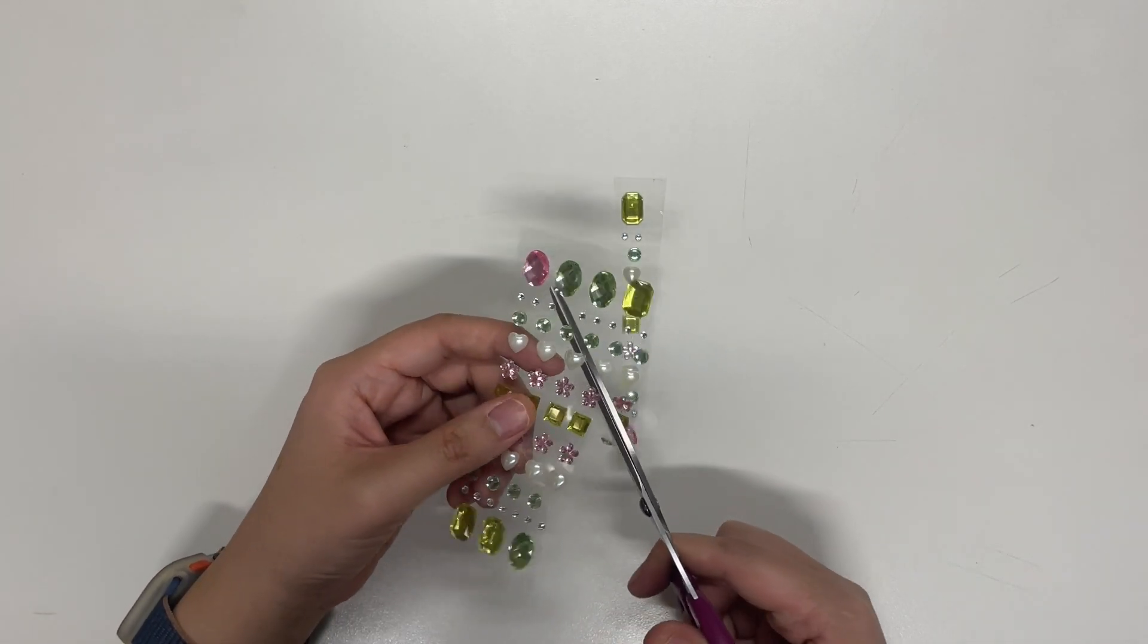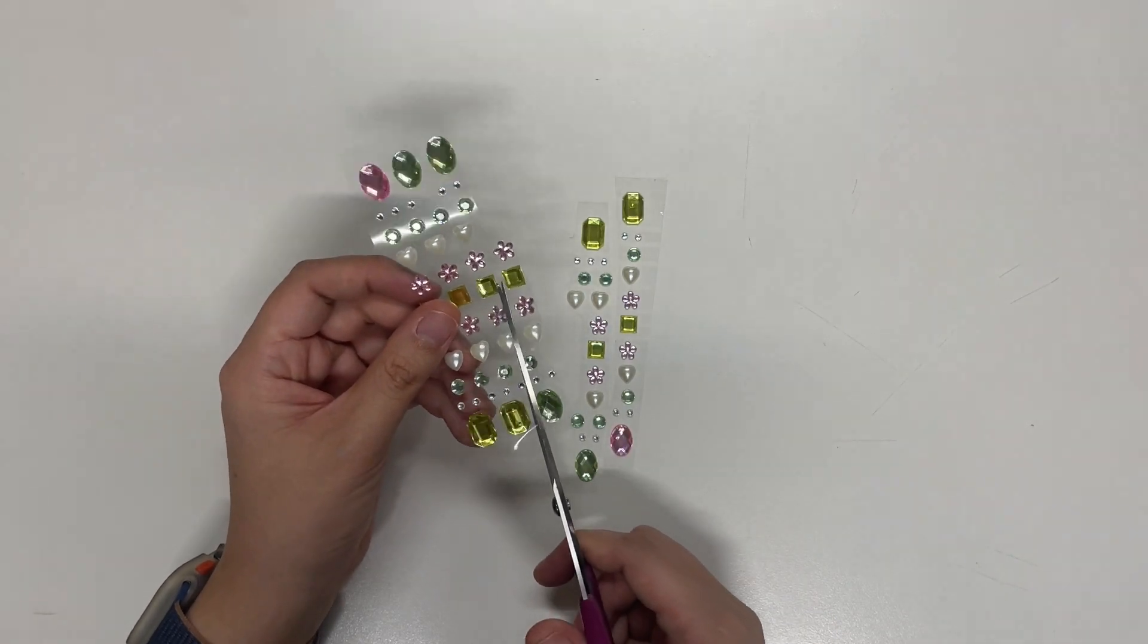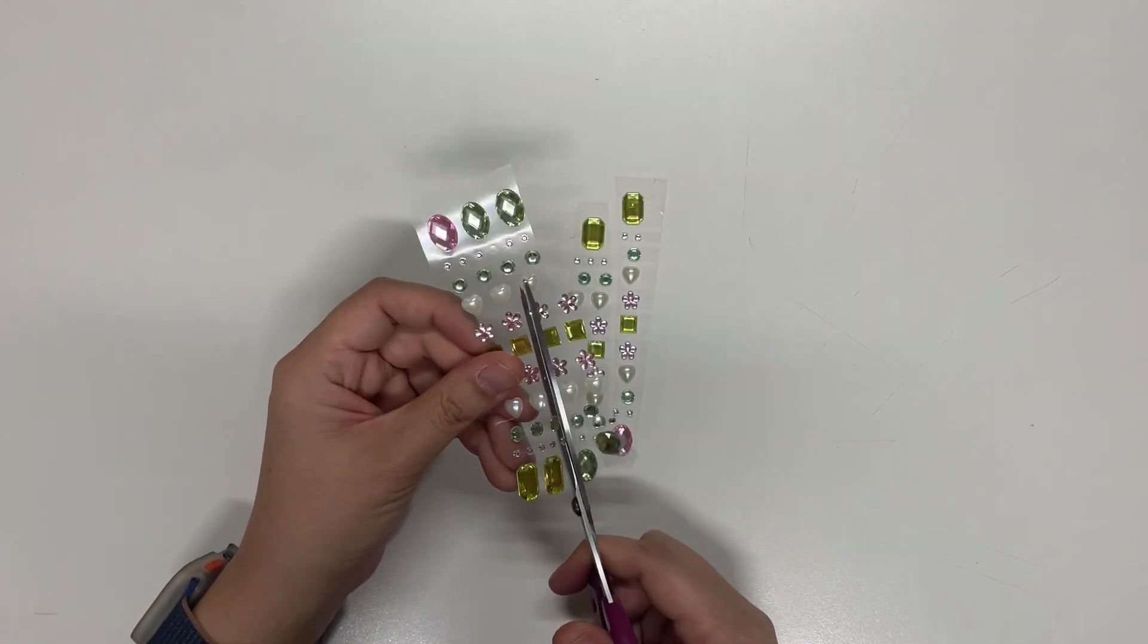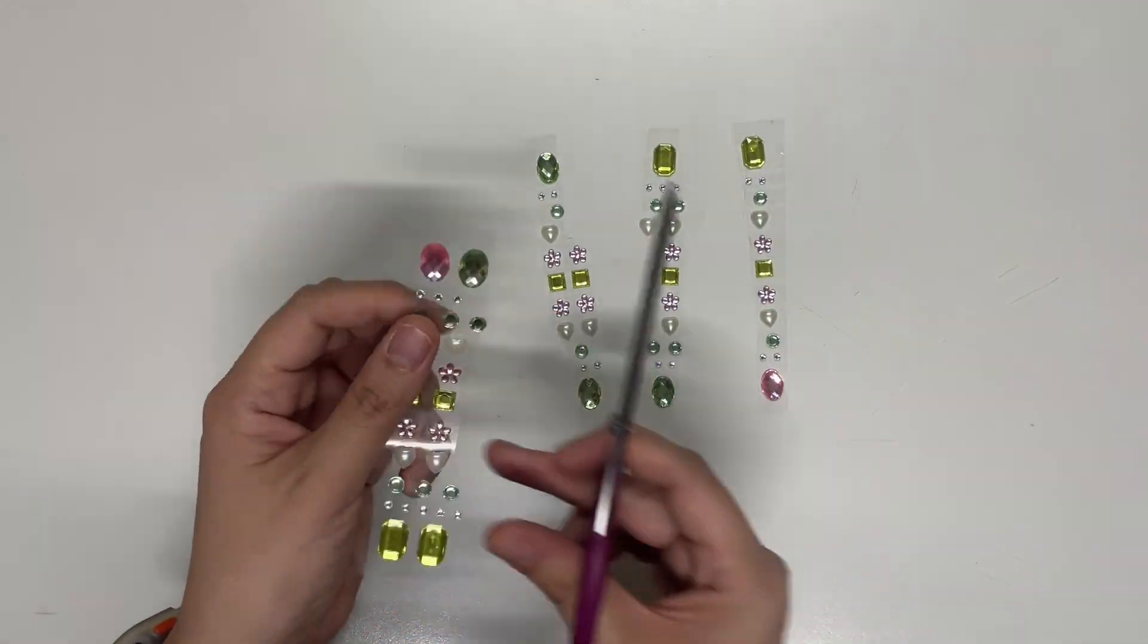And lastly let's grab our gem stickers and we are going to divide this type of gem stickers into five. Now I'm cutting vertically to make sure that each kid gets at least two big gems.